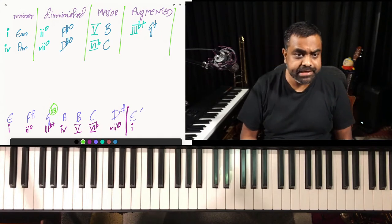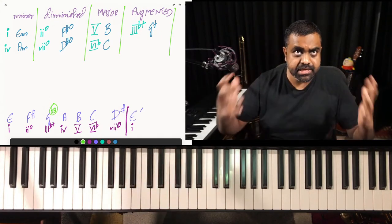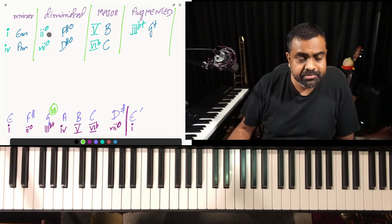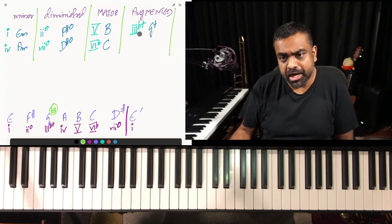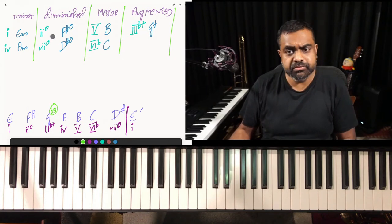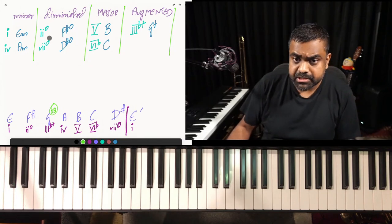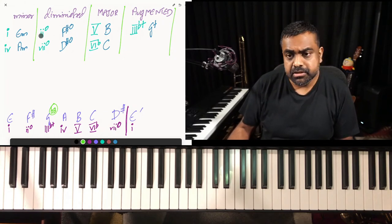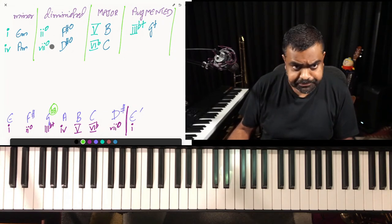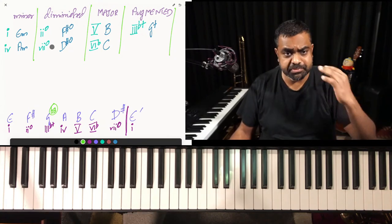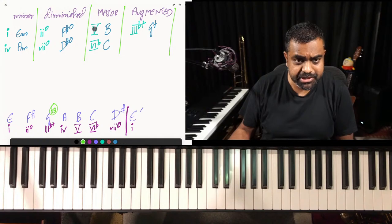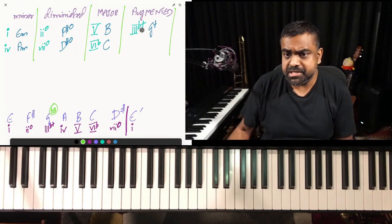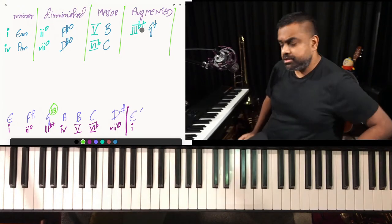These are all the chords of the E harmonic minor scale. There are seven chords: two are minor, two are diminished, two are major, and one lone one is augmented. A functional way to remember it: one and four are minor; two and seven are diminished; five and six-flat are major; and three you remember as augmented.